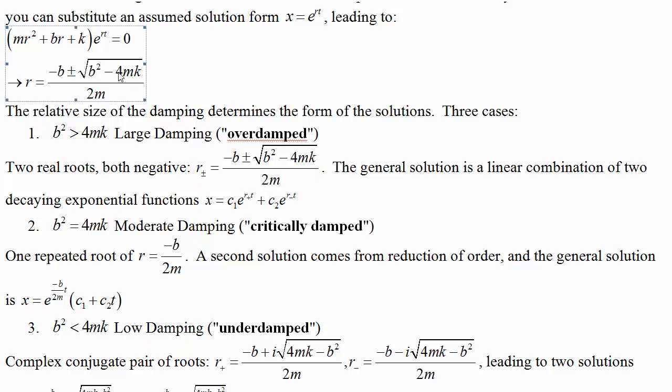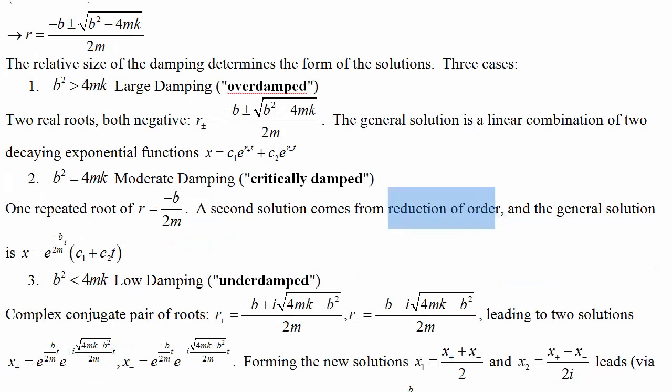If this is zero, then we have one repeated root, and we'd have to use reduction of order to find the second solution, which basically just means you multiply the first one by t.